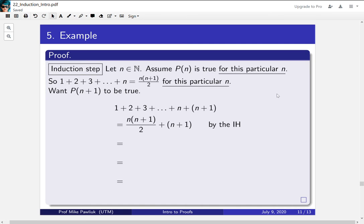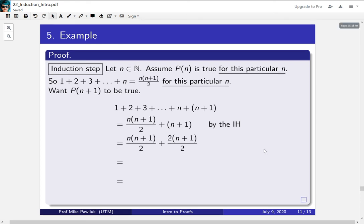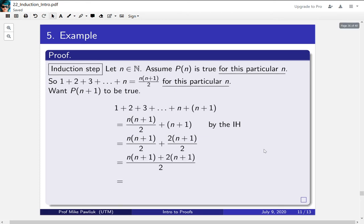And now from here on in we're going to do some algebra and we want to get this to be (n+1)(n+2)/2. So I put them under a common denominator, add them up together, factor out the (n+1), and I get what I want. So this is what would happen if you replaced this with n+1. It would be n+1 and n+2.